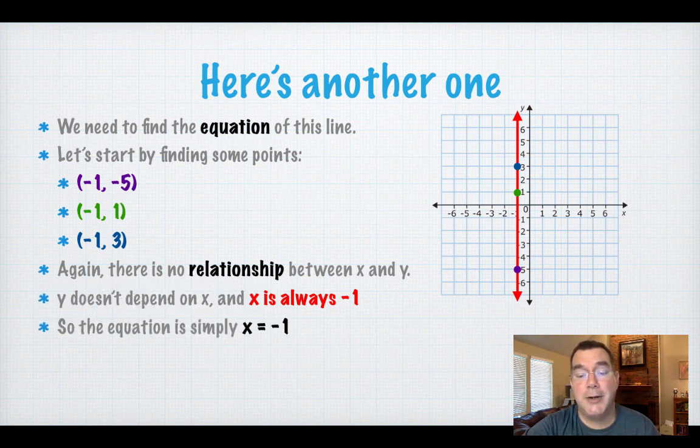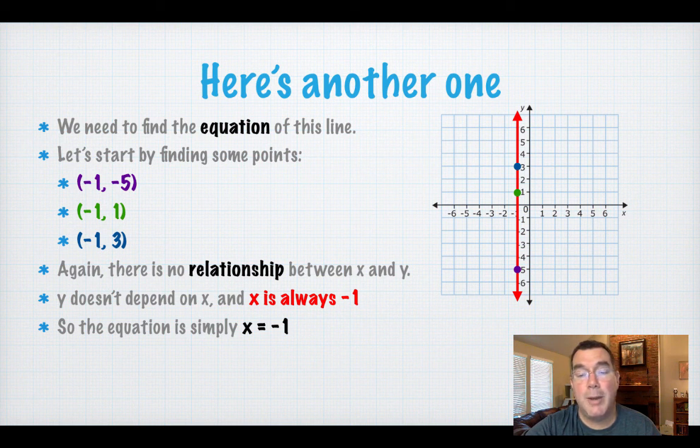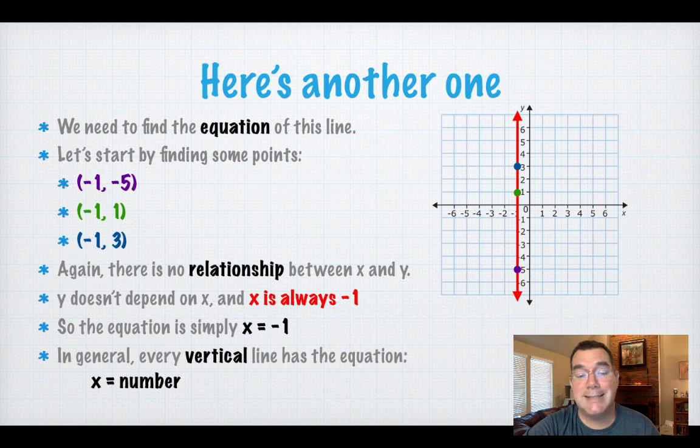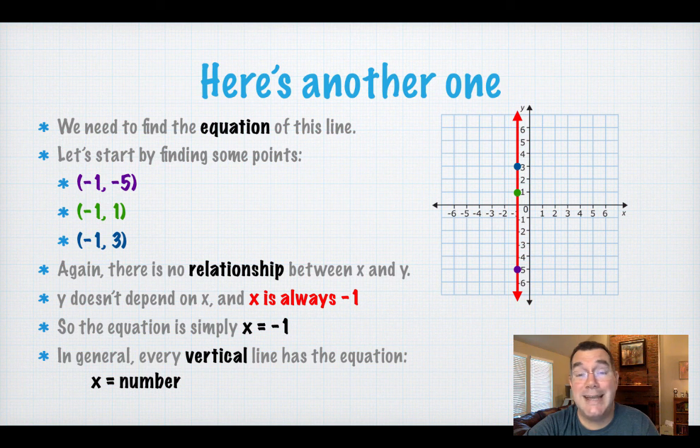So hopefully you can see the pattern now that no matter what the vertical line is, the formula for it is x equals some number. And again, to figure out what that number is, you can always look and see where that vertical line crosses the x-axis. And that will tell you what the formula or the equation is for that line.